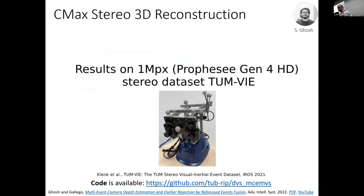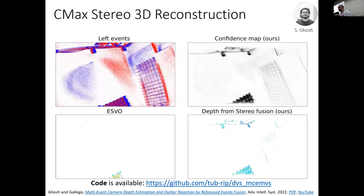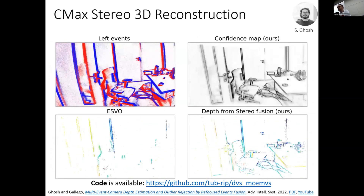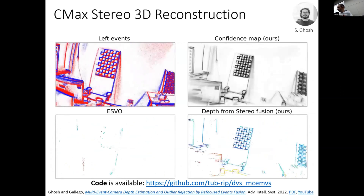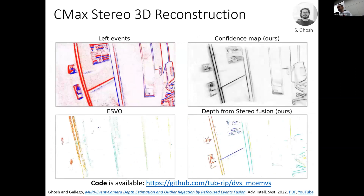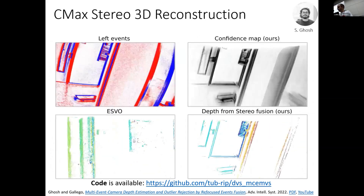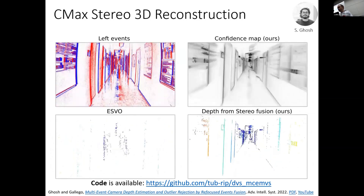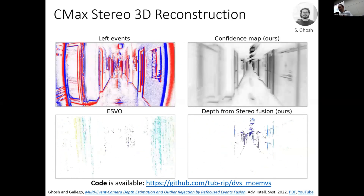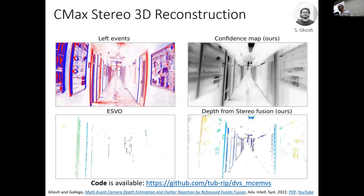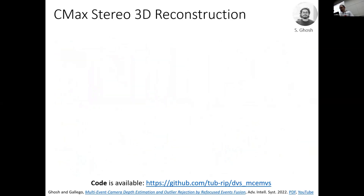The previous sequence is from the DSEC dataset. This one is from the 1-megapixel camera dataset from TU Munich. Here there is no ground truth depth, so we cannot directly compare. The method requires poses — in this case provided by a motion capture system inside the room. Outside the room, poses come from another visual odometry method. We can still use it to obtain depth in complicated scenarios like moving forward in a narrow corridor.